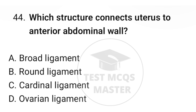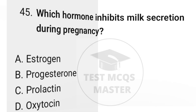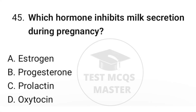Question number forty-four: which structure connects the uterus to the anterior abdominal wall? The correct option is B, round ligament. Question number forty-five: which hormone inhibits milk secretion during pregnancy? The correct option is B, progesterone.